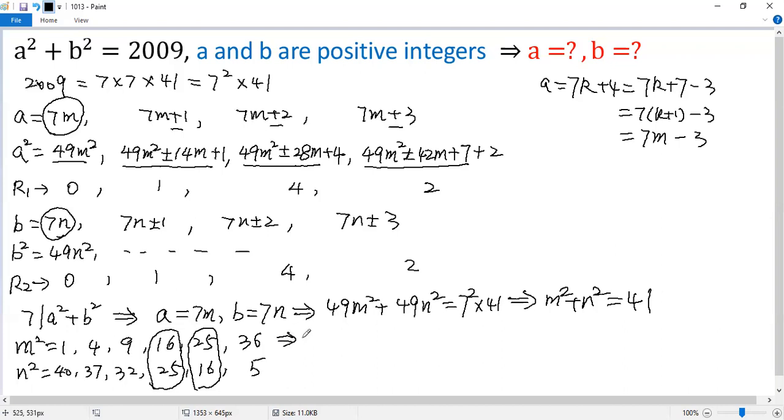So the only solution would be m squared equals 16, then n squared must be 25, or m squared equals 25, then n squared equals 16. So we can get m equals 4, n equals 5. So we know a is 7 times m, so it would be a equals 28, b equals 7 times n, so it would be 35.